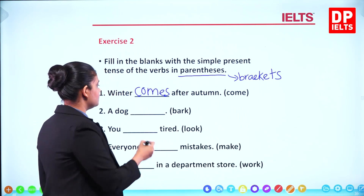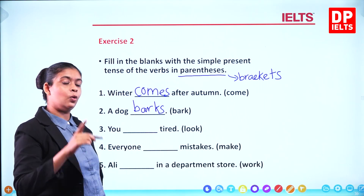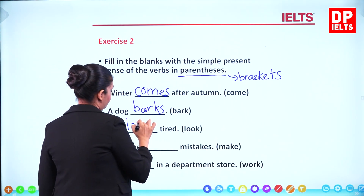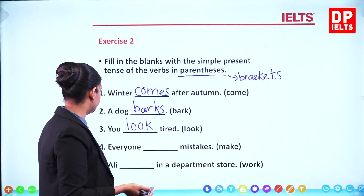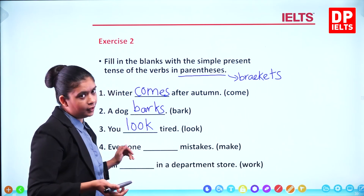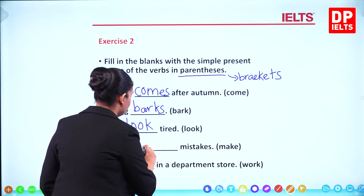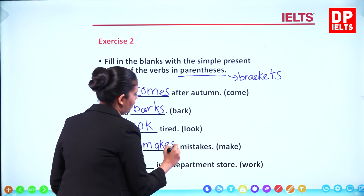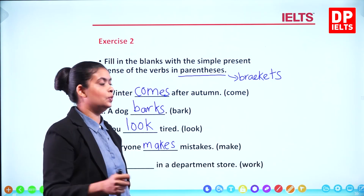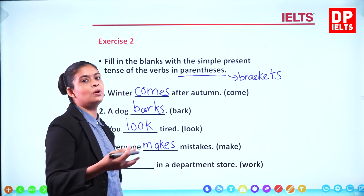A dog barks — balek bura naa, balek ne barks. You — it acts like a plural, ekka act karan ne plural ekka kwaage. You look tired. Everyone makes mistakes — everyone hamoma unata, ekka act karan ne singular ekakwaage, ehe hindha everyone makes mistakes. Hemoma veradhi karanava. Hemoma ki water ekka act karan ne singular ekakwaage. Ali in a department store — department store kyaane hemma badu akma thiya neka.